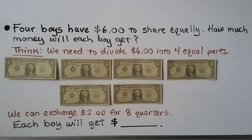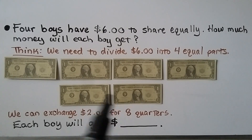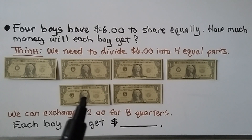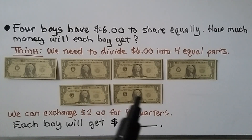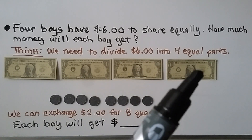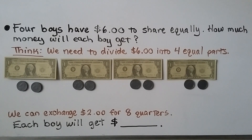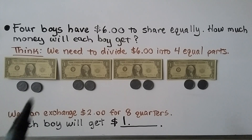Four boys have six dollars to share equally. How much will each boy get? We need to divide six dollars into four equal parts. We exchange two dollars for eight quarters — one dollar is four quarters, the other dollar is four quarters. We give each boy one of the four one-dollar bills, then distribute the quarters one at a time until each boy has two quarters. Each boy gets one dollar and two quarters, which equals one dollar and fifty cents.